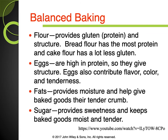We don't get into a lot of baking, but this slide goes over what each ingredient in baking is used for. Flour provides gluten and protein for structure — bread flour has the most protein so it's the stiffest, while cake flour has less gluten so it's softer. Eggs are high in protein, give structure, and contribute to flavor, color, and tenderness. Fat provides moisture and helps give baked goods their tender crumb. Sugar provides sweetness and keeps baked goods moist and tender.